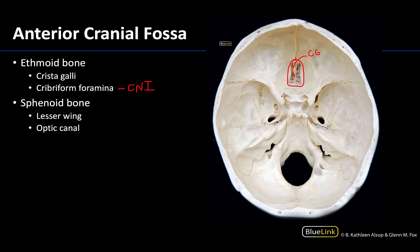Moving a bit posteriorly we get to the sphenoid bone — my all-time favorite bone. One of the biggest characteristics of the sphenoid are the two sets of wings. Here are your lesser wings, and this region here is associated with the greater wing of the sphenoid. Just medial to the lesser wings of the sphenoid there will be the optic canals. The optic canals lead into or away from the orbit, so the ophthalmic artery as well as cranial nerve 2 will traverse the optic canals.